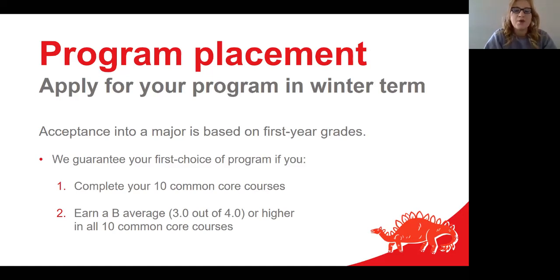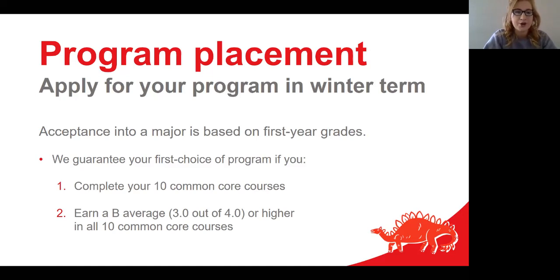We know that getting into your program of choice is important, so we guarantee your first-choice program if you complete your 10 courses within your first year and earn a B average — that equates to a 3.0 out of 4.0 or higher in those 10 technical courses.